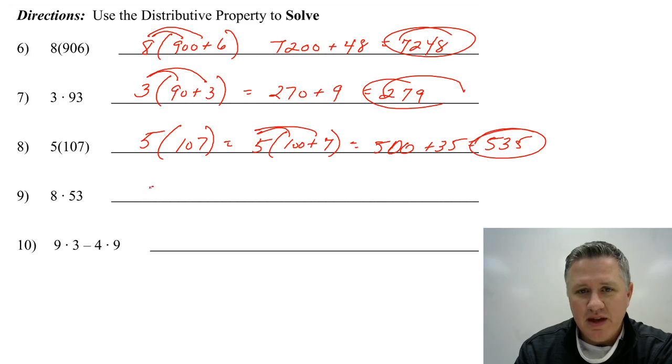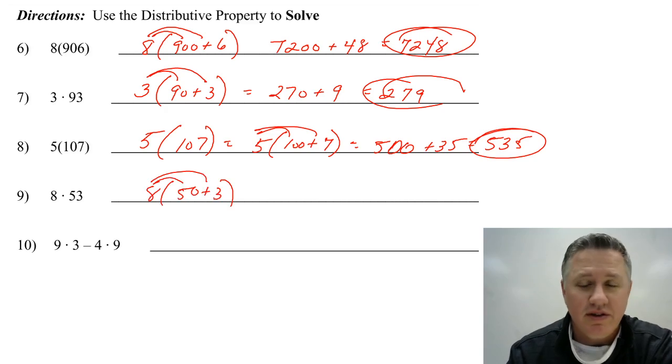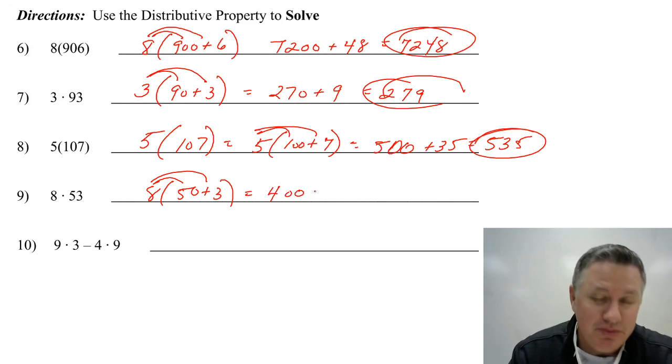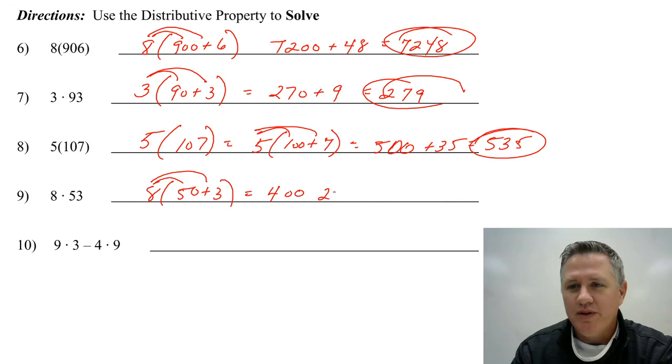Next one. 8 times 53. Well, that's the same thing as saying 8 times 50 plus 3. So I'm going to distribute that 8 and get 400. I'm going to distribute the 3 to the 8. Sorry. Distribute the 8 to the 3 and get 24. And I get 424.